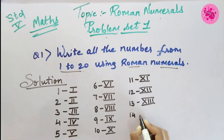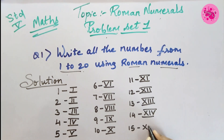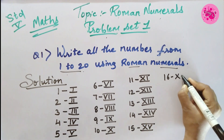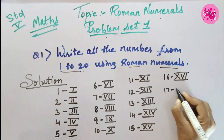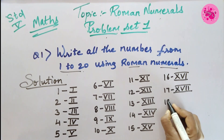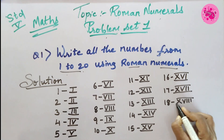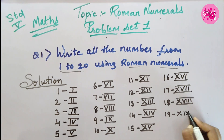For 14 we write X and the symbol of 4, that is I and V (XIV). For 17 we write X and the symbol of 7 (XVII). For 18 we write X and the symbol of 8, that is V and III (XVIII). For 19 we write X and the symbol of 9, that is I and X (XIX).